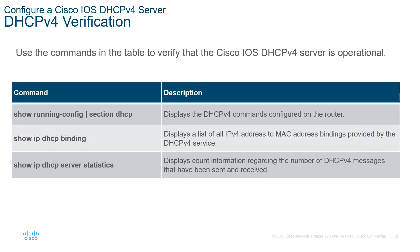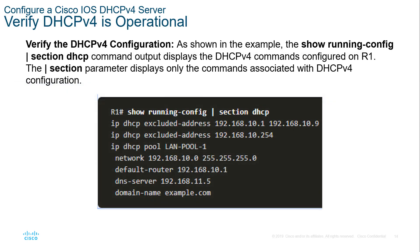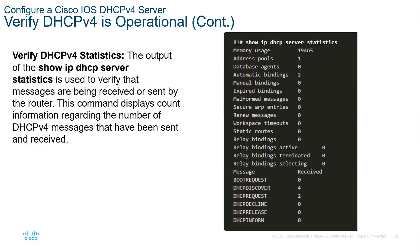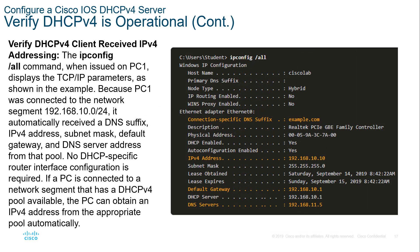For verification, you can use 'show run', 'show ip dhcp binding', or 'show ip dhcp server statistics'. The binding command shows addresses tied to MAC addresses and when the lease expires. The statistics command shows the address pool, bindings, and all other DHCP-related statistics. From the client side, issuing 'ipconfig /all' at a terminal shows the assigned address, domain name, default gateway, DNS server, and lease expiration time.